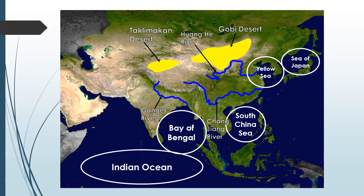Next is the Gobi Desert. It covers northern China and southern Mongolia. It's the largest desert in Asia. Gobi means waterless place.